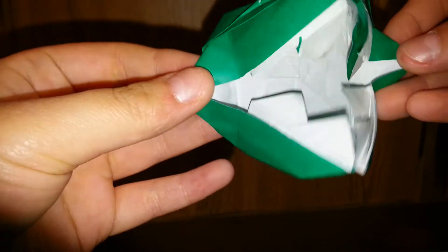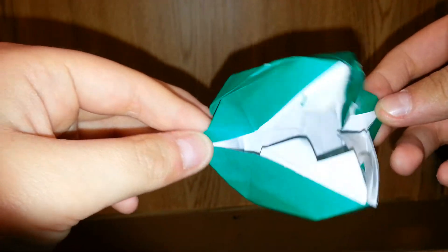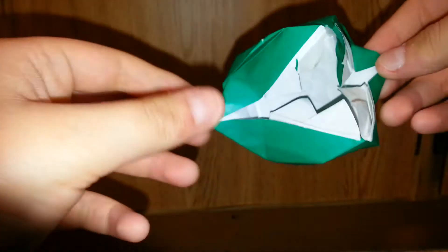And obviously, I folded it from a sheet of Kami origami paper. Perfect for this model because you have snake skin and you have white teeth.